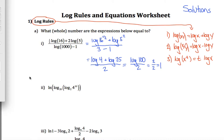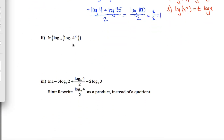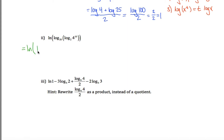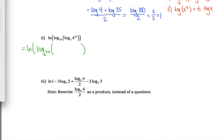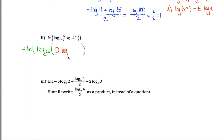Moving on. The second one has nested logs, which is a little challenging, but we can deal with them — start from the inside. This is the natural log of something, which is the log base 20 of something, which is the log base 2 of 4 to the 10th power. I can apply my third log rule to take this exponent and bring it down in front of this log — in front of the log whose argument is being raised to that exponent. So this 10 comes right here and I get 10 times the log base 2 of 4.